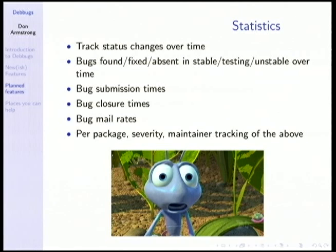Another thing we need is better statistics. We need to track bug changes over time — when they were submitted, when they were closed, how much mail is going to them — and we need this information on a per-package, severity, maintainer, and tag basis. So we can see which packages need more love, which maintainers are MIA, and all those sorts of things. If somebody is interested in this or has more ideas of things they'd like to measure using the BTS, I need a list of feature requests before I can strongly implement statistics.